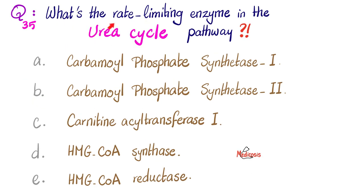What is the rate-limiting enzyme in the urea cycle pathway? Is it CPS1, CPS2, CAT1, HMG-CoA synthase, or HMG-CoA reductase? Please pause. The answer is CPS1 — carbamoyl phosphate synthetase 1 — which is the rate-limiting enzyme in the urea cycle pathway.